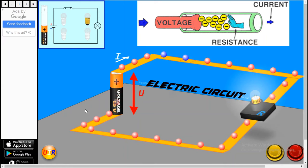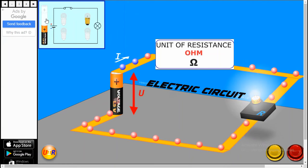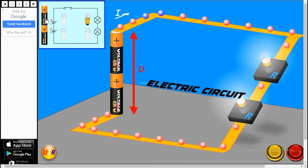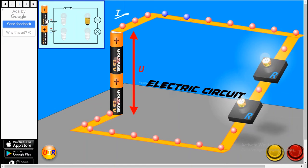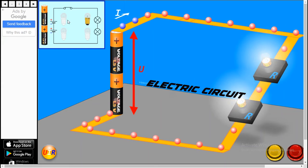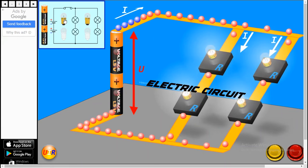If we add one more battery, we are providing more voltage or the same hidden energy which is trying to move the electrons. What happens if I add one more bulb in parallel to this?